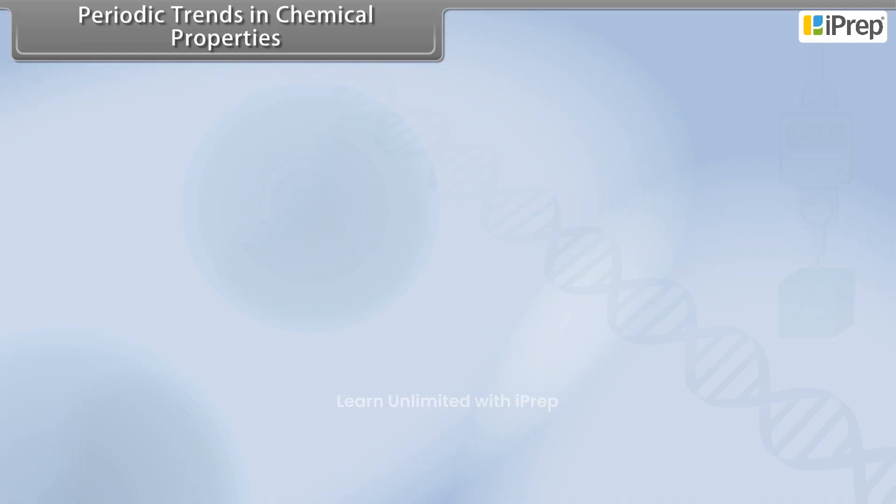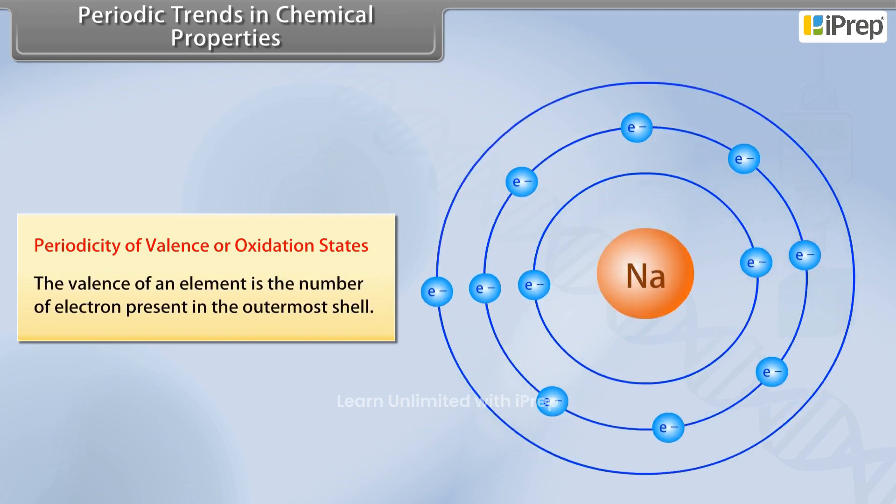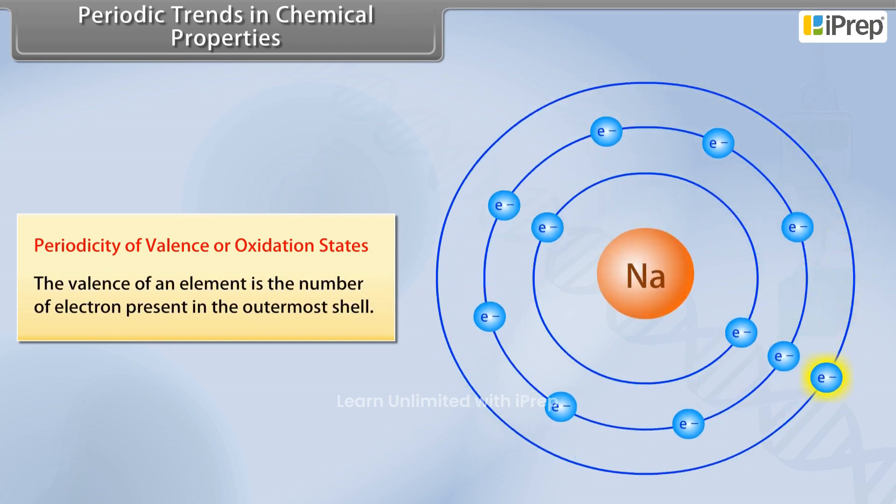Periodic Trends in Chemical Properties. Periodicity of Valency or Oxidation States. The valency of an atom is the number of electrons present in the outermost shell.